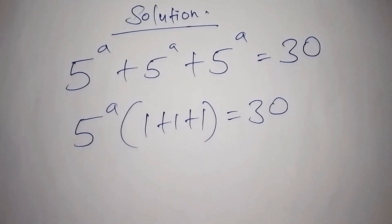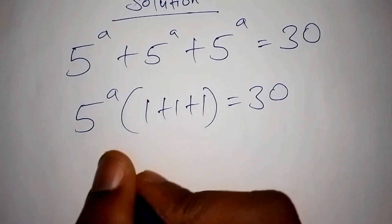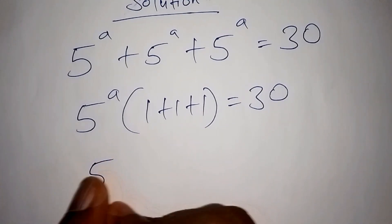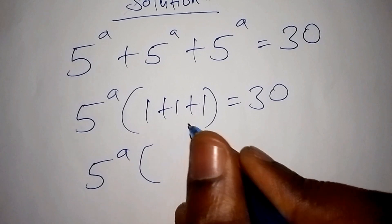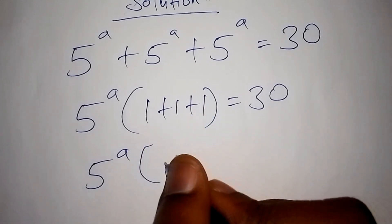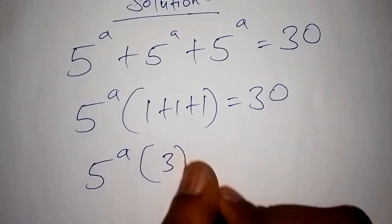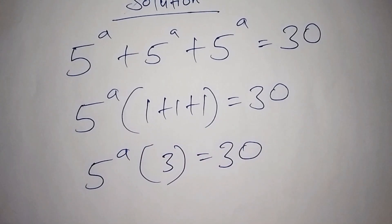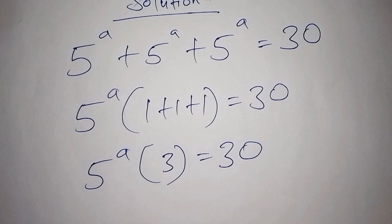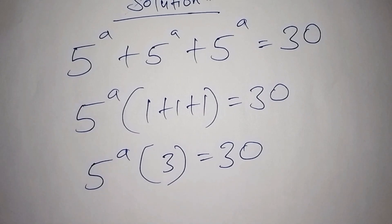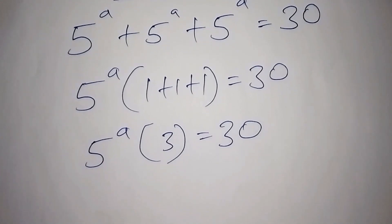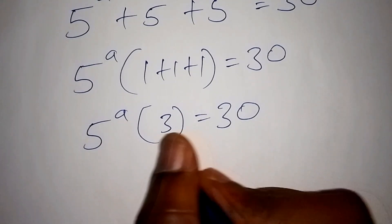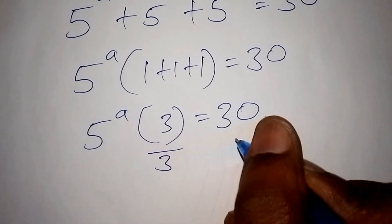Let us now work out what is inside the bracket. We shall have 5 to the power of a into bracket: 1 plus 1 plus 1 is 3, is equals to 30. From there we work out the number inside the bracket, which is 3. Let us divide both sides by 3.